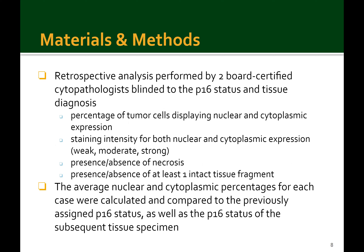For each case, retrospective analysis was performed by two board-certified cytopathologists who were blinded to the P16 status and the tissue diagnosis. They independently scored the percentage of tumor cells displaying nuclear and cytoplasmic P16 expression, noted the staining intensity as weak, moderate, or strong, and documented whether there was a necrotic background and whether there was at least one intact tissue fragment, defined as a cohesive cluster of 20 or more viable tumor cells. The average nuclear and cytoplasmic percentages were then compared to the previously assigned P16 status in the cytology report and the P16 status on the subsequent surgical biopsy or resection specimen.